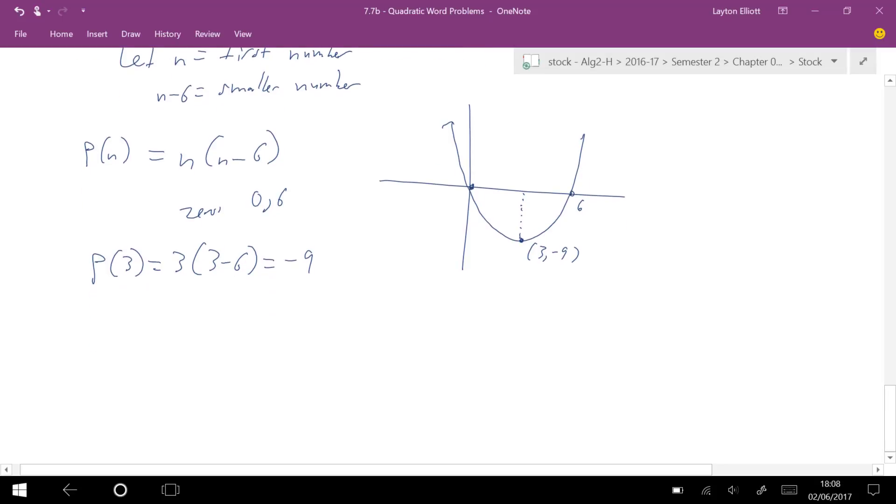Okay, let's say I didn't want to do that. Let's say I wanted to multiply this out and get p(n) is equal to n squared minus 6n. Well, I could go ahead and do negative b over 2a, which is the x value of the vertex. That is 6 over 2, which is 3, then plug 3 right back in, and I get negative 9.